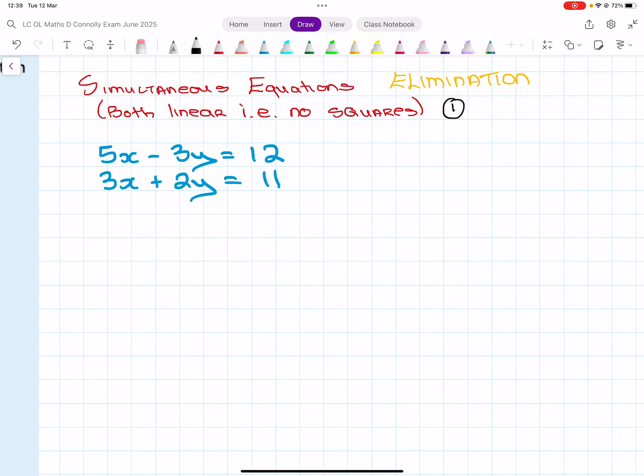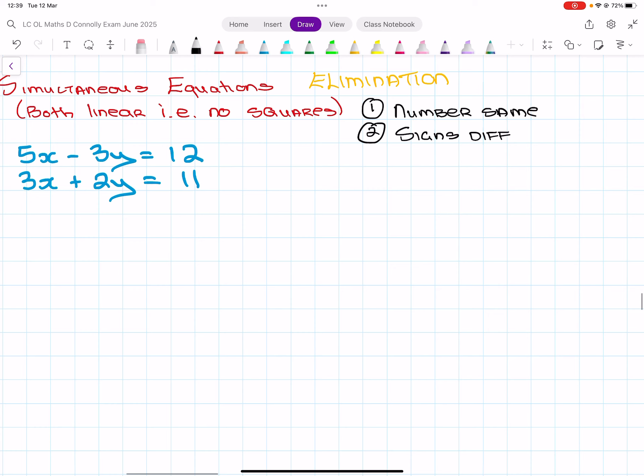So the first step, these are very brief versions of the steps, so I will explain further. Number is the same. Second step is signs different. Third step is solve. And fourth step is sub and solve.